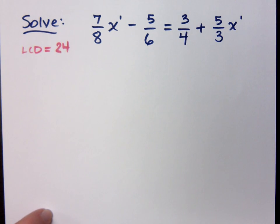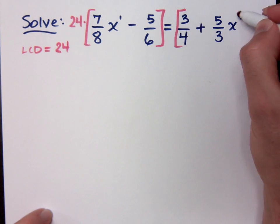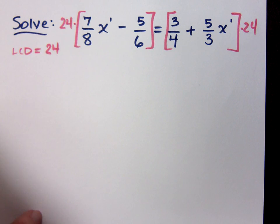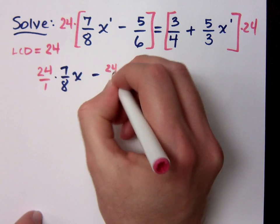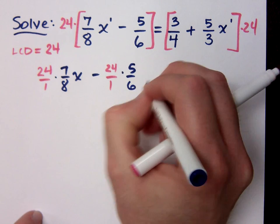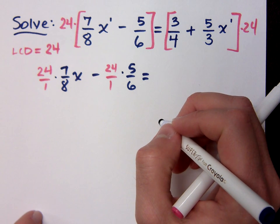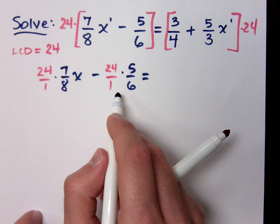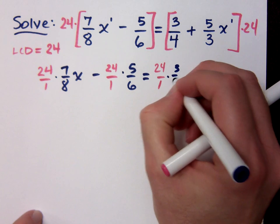Now what I'm going to do is multiply everybody times the 24. So multiply both the left side and the right side times 24. Do I need to say 24 over 1, or could I just say 24? I think a lot of times students will do better when they see it as the improper fraction 24 over 1. So we're going to keep multiplying everything times 24 over 1.